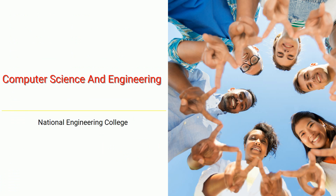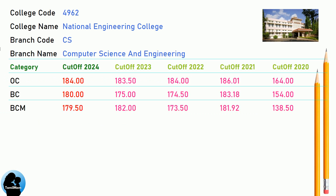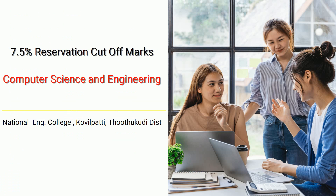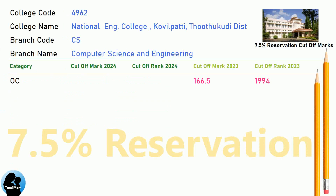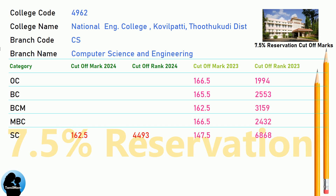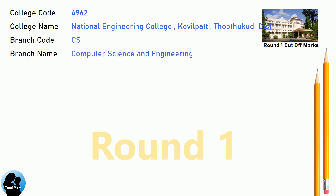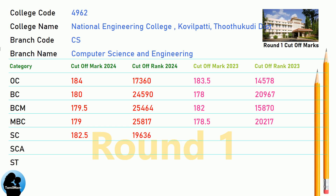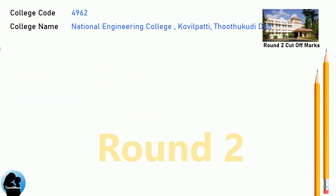DNA cut-off for National Engineering College in Computer Science and Engineering. DNA 7.5 Reservation cut-off for National Engineering College in Computer Science and Engineering. DNA 8.5 Reservation cut-off for National Engineering College in Computer Science and Engineering.